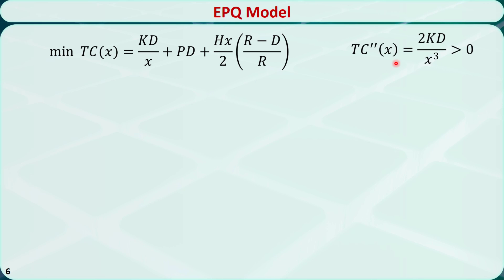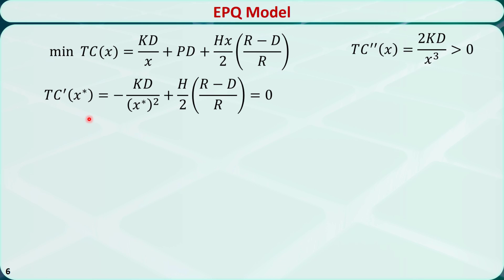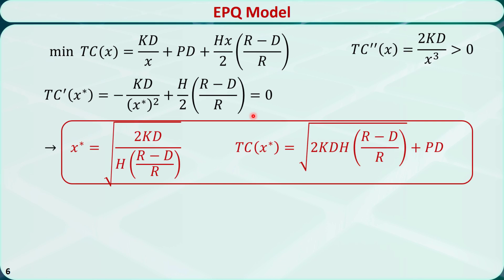Let's take the second-order derivative. We know that the unit setup cost K is greater than 0, the demand is greater than 0, and the production quantity x is also greater than 0. So the second-order derivative must be greater than 0, meaning this objective function is a convex function. This is a minimization problem, so to find the optimal solution, we set the first-order derivative equal to 0 and solve for x. The optimal solution is x-star, which is the Economic Production Quantity, or EPQ.